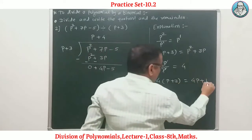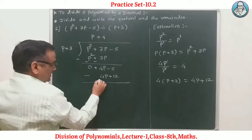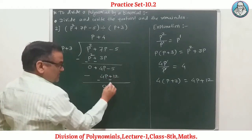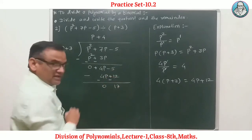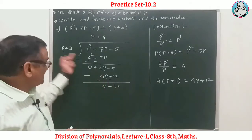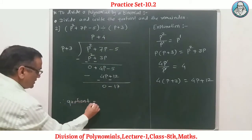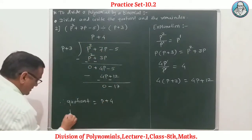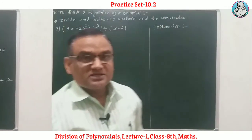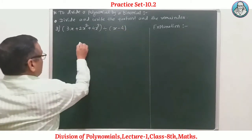Continuing with example 2: 4p + 12, subtraction — positive becomes negative: 4p minus 5, negative 12, negative sign changes to addition. Working through the remainder terms, arriving at the final answer.